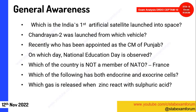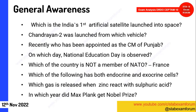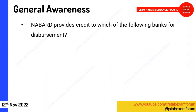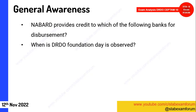Which gas is released when zinc reacts with sulphuric acid — this is a General Science question. In which year did Max Planck get the Nobel Prize? The answer was 1918. NABARD provides credit to which banks? The answer was state cooperative banks. When is DRDO Foundation Day observed? It is on 1st January.